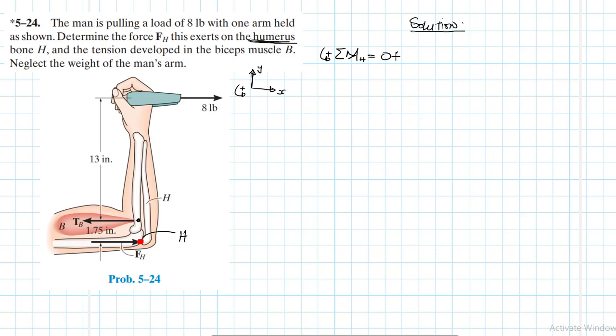So I'll say summation of moments about point H is equal to zero and clockwise being our reference positive. So what forces do we have that are going to cause a moment about point H? We have eight pounds and this is causing the clockwise which will be negative so it will be minus eight times what's the lever arm. The lever arm is 13 plus 1.75 so it's 14.75. And then we have also TB. TB is going to cause a clockwise so say plus TB times the lever arm which is 1.75. That's all, then equal to zero.